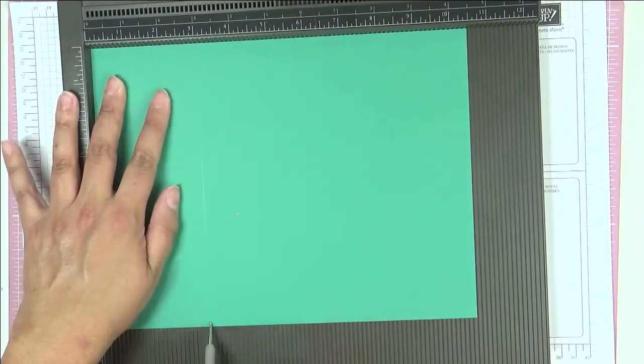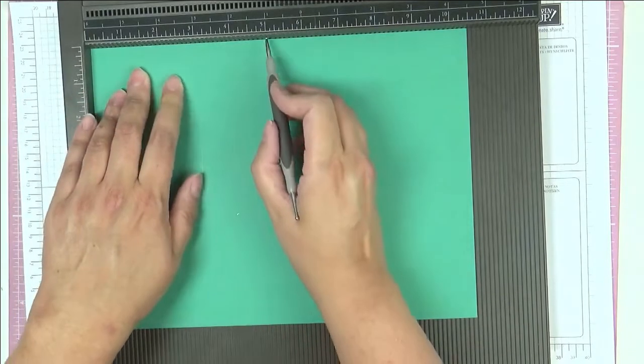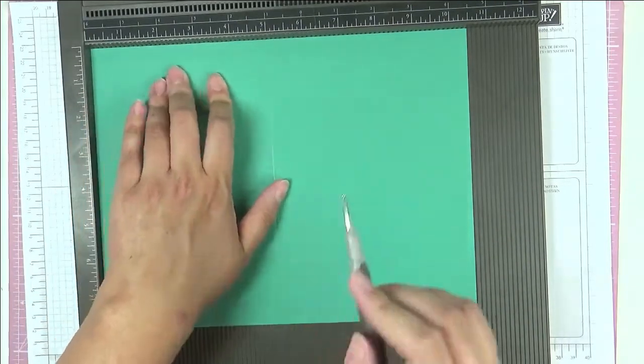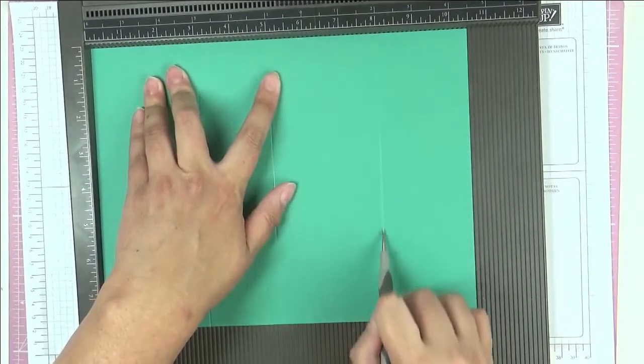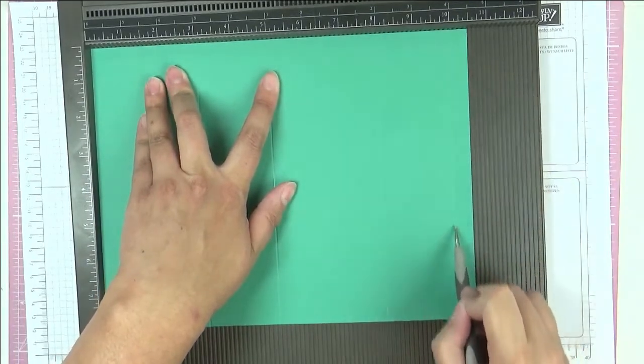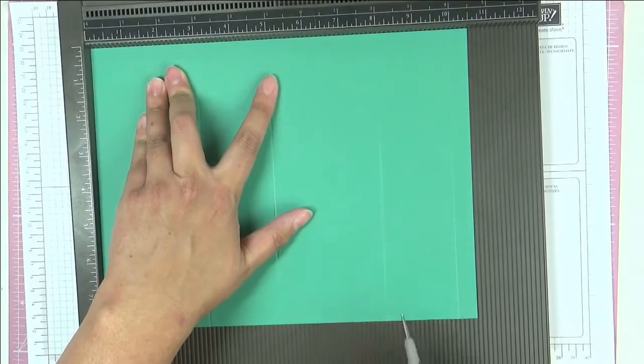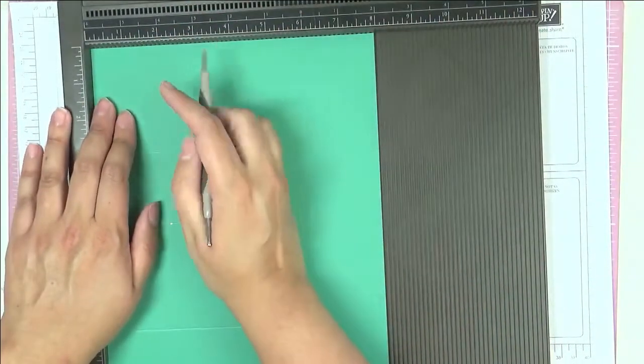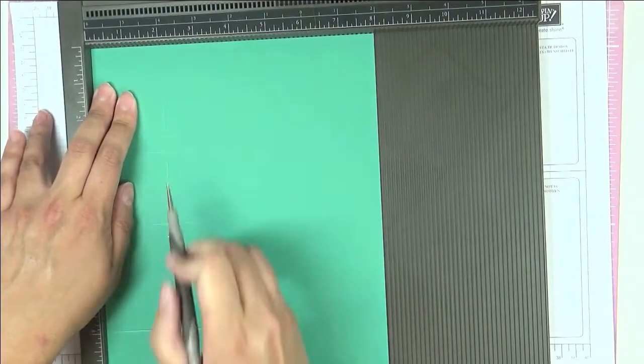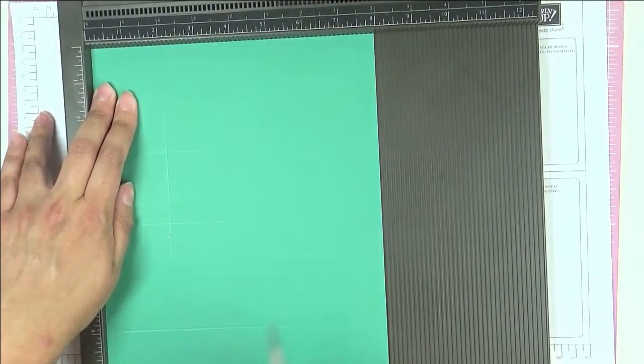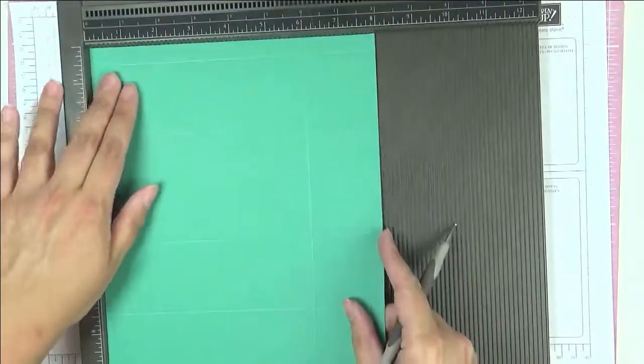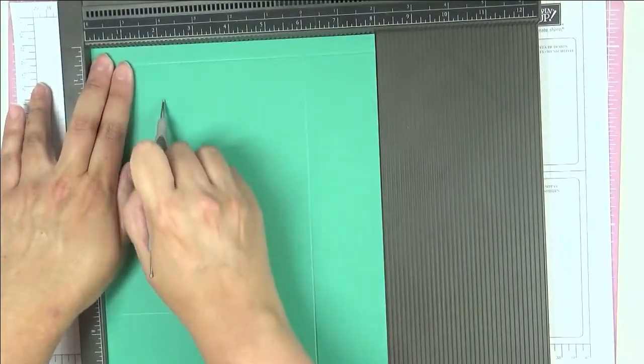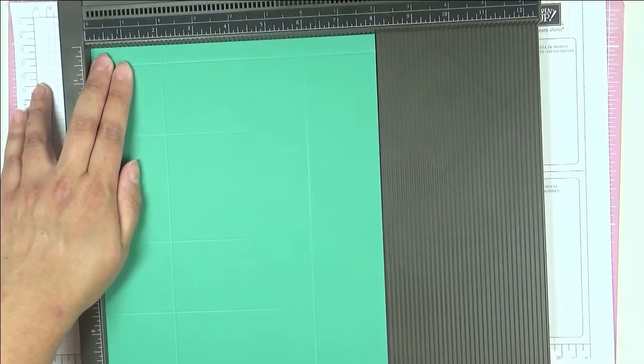Now on the long side we're going to score at three inches, five inches, eight inches and ten. That's three, five, eight, and ten. Turn it around, I'm going to score at two inches on the other side, so two inches here and then turn it around like this and two inches like that.